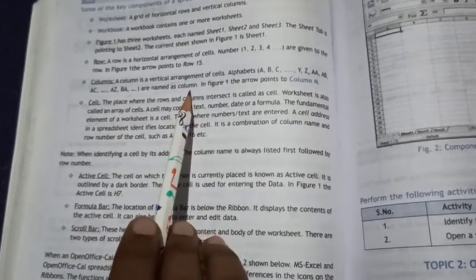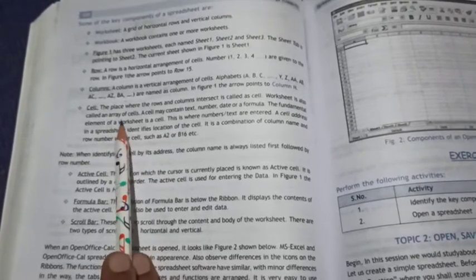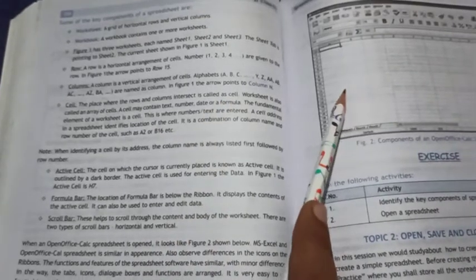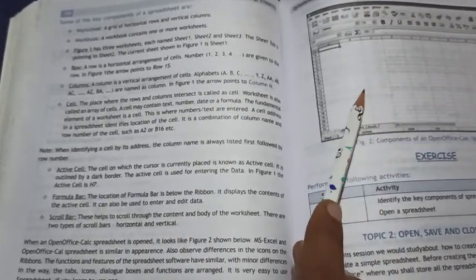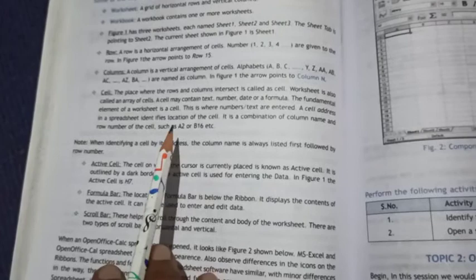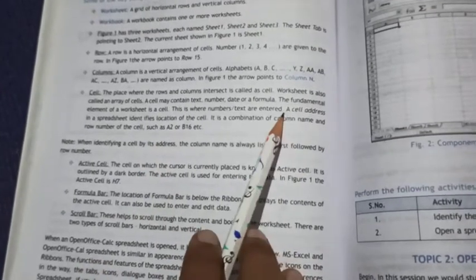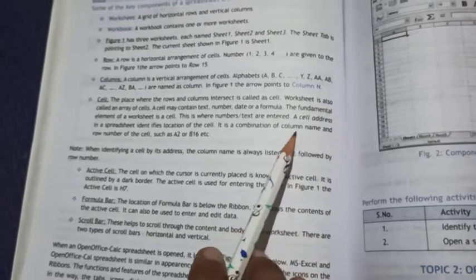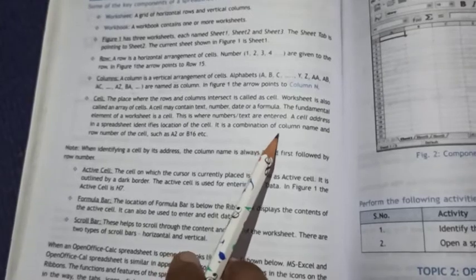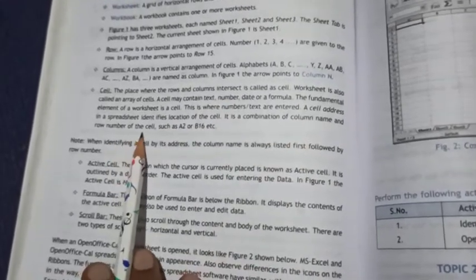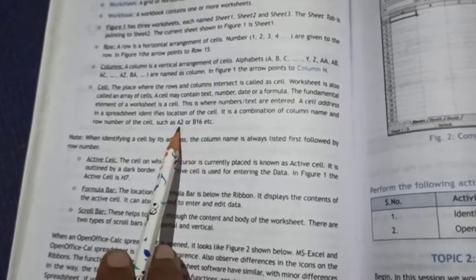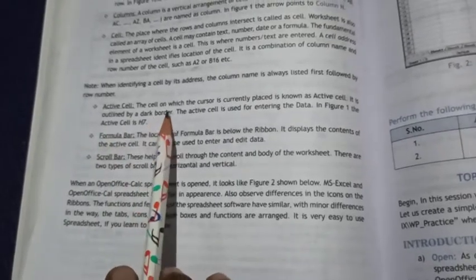Cell: The place where a row and column intersect is called a cell. Each cell has a name called the cell address, which is formed with the combination of column name and row number, like A2 or B16.